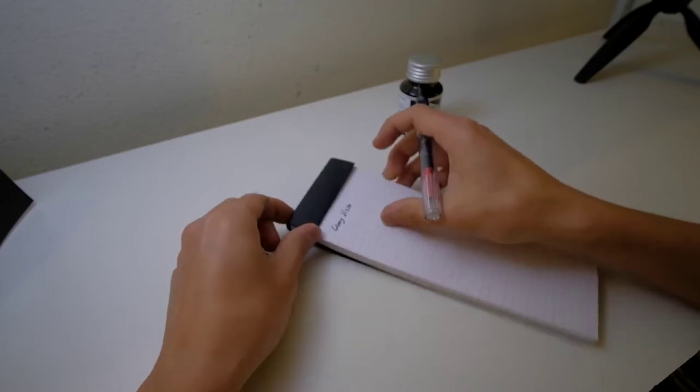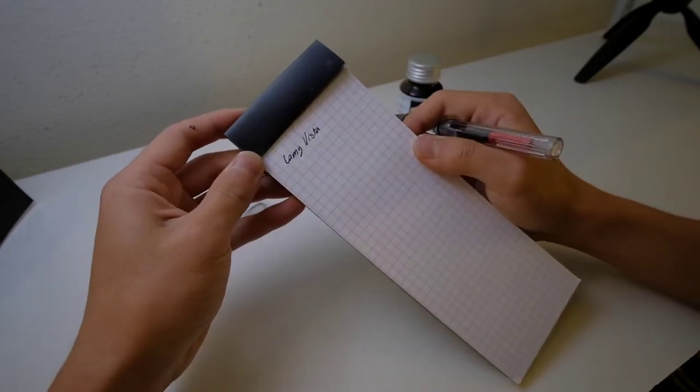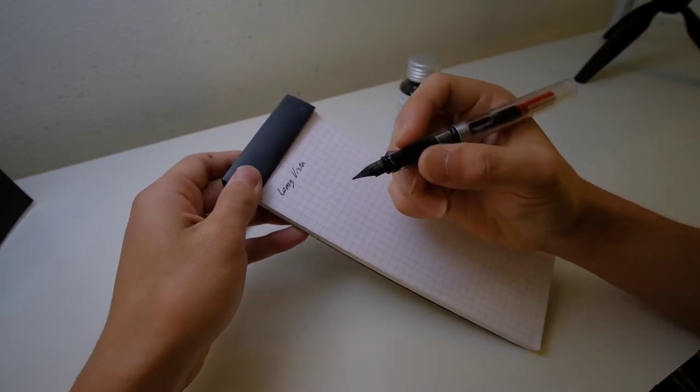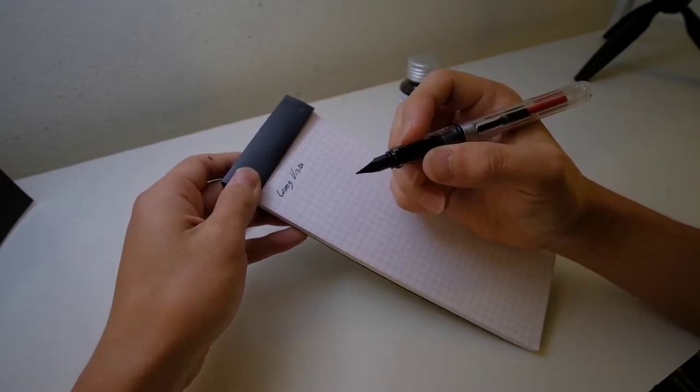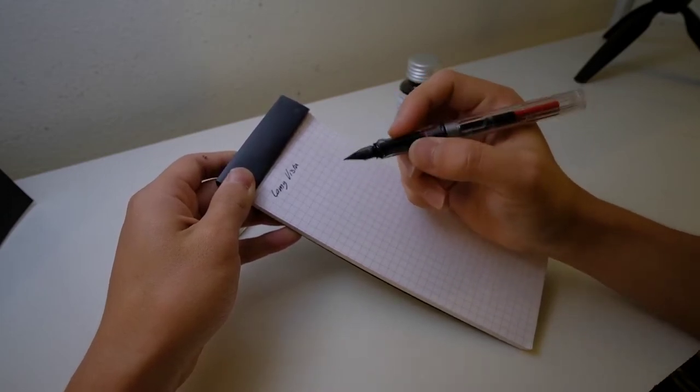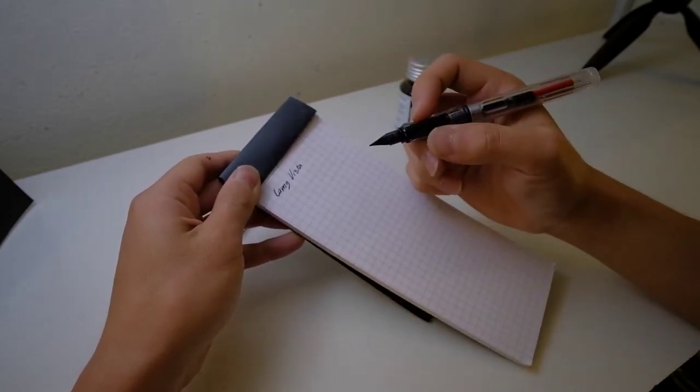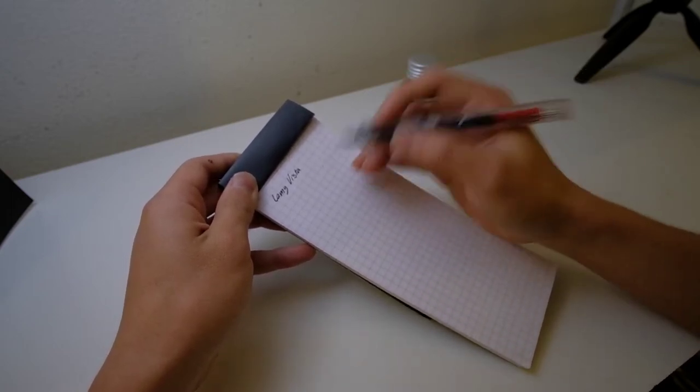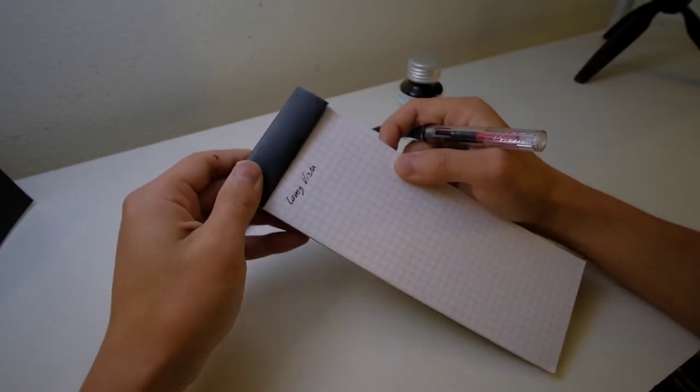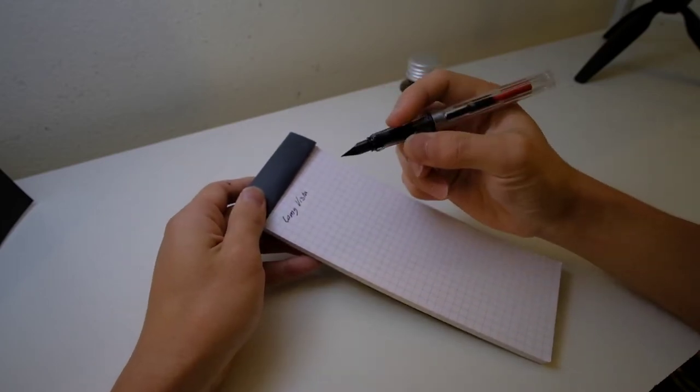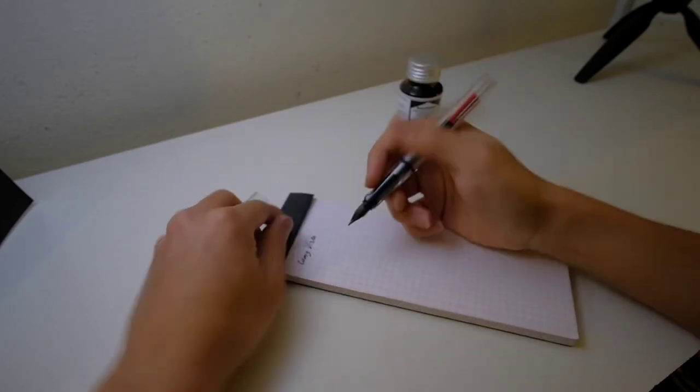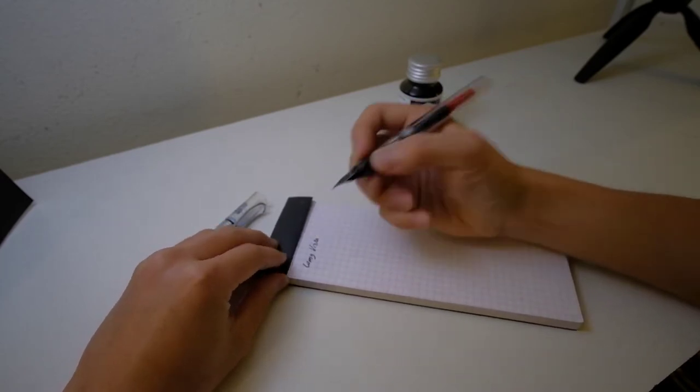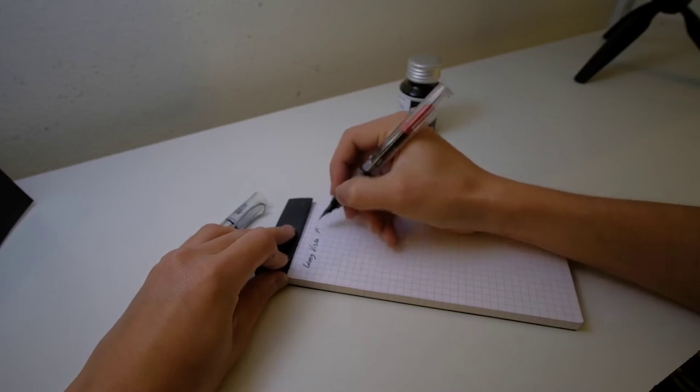It's a fine, but as you can tell, it writes... I'm not sure if it's just because the tines have become a little bit more spread on the nib, or if it's just how... Generally, European fountain pens tend to write broader than their Asian counterparts, so even though this is a fine, it tends to write a little bit wider than other nibs.